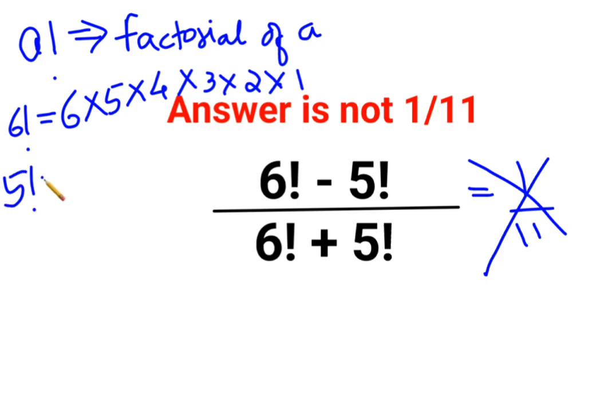Similarly, 5 factorial can be written as 5 × 4 × 3 × 2 × 1. If you see, this whole thing is common. So 6 factorial can also be written as 6 multiplied by 5 factorial.